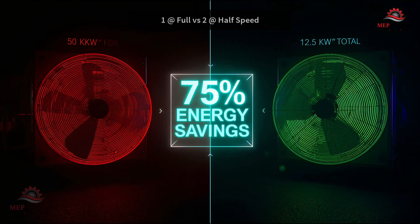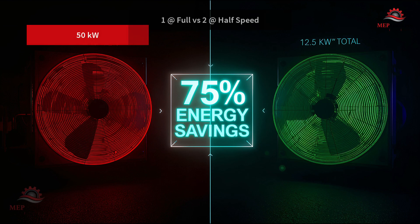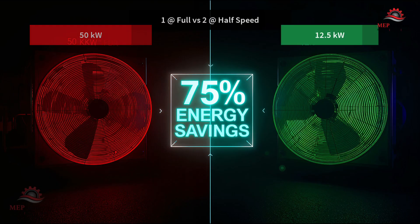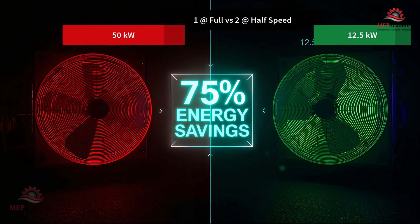Here's where it gets interesting. Suppose one fan at full speed draws 50 kilowatts. If you run two fans at half speed, you still move the same air, but the power drops to just 12.5 kilowatts – a 75% reduction in fan energy. In cooling towers, distributing water over more fill at lower air velocity often improves heat transfer.